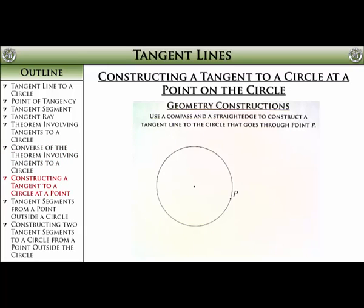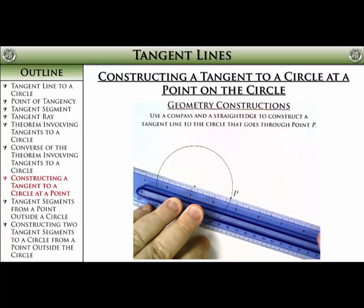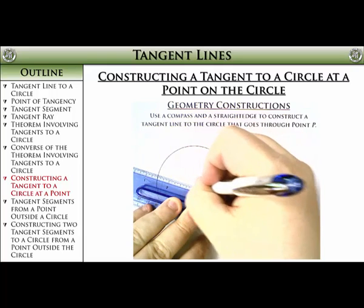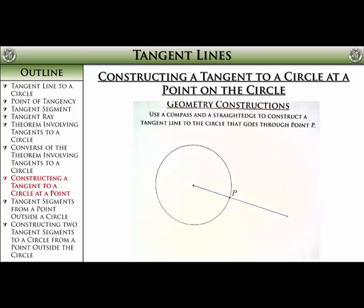The first step to this construction is to draw a line from the center of the circle and through the point that we are going through. But when you do it, you don't stop at that point. Keep going. We don't want to stop at P. You need to go past that point for a bit so we have some room to work.